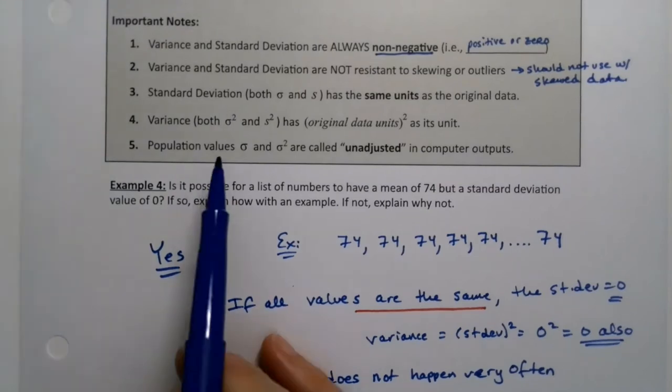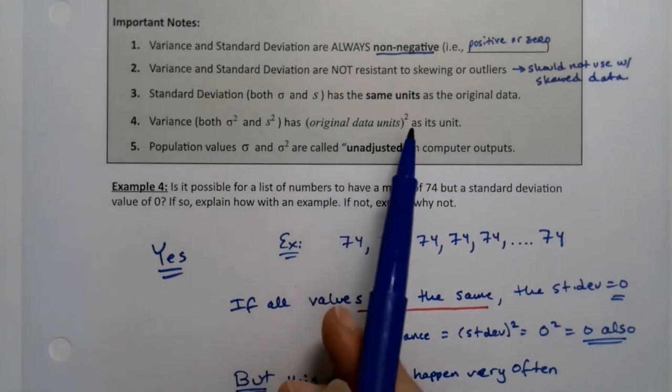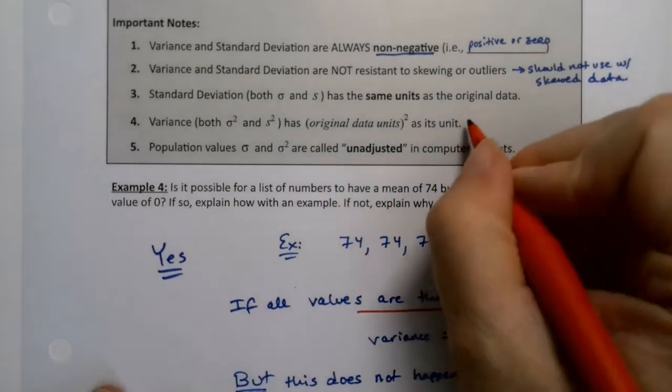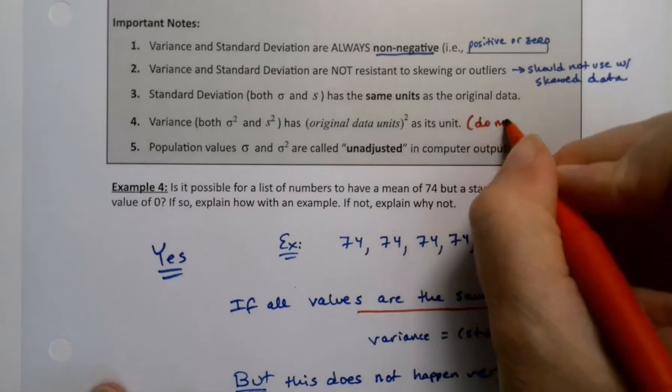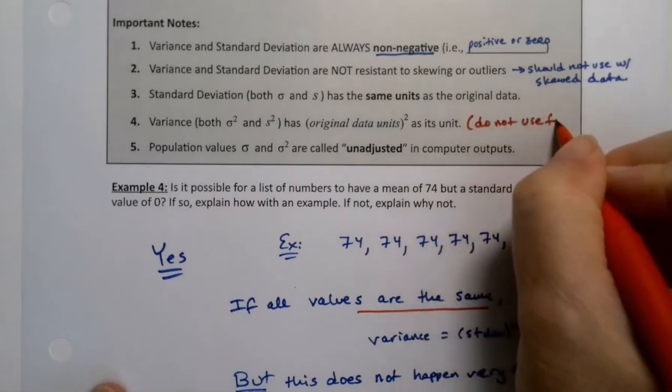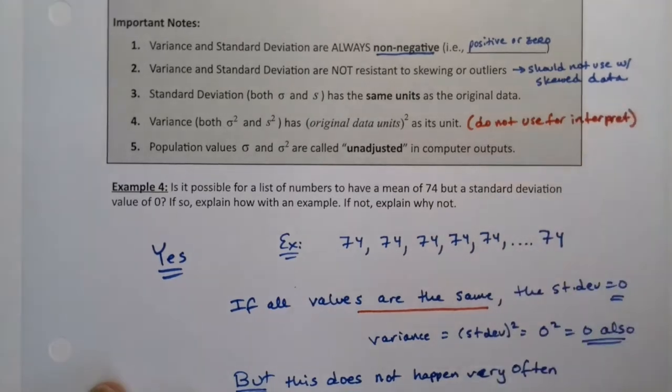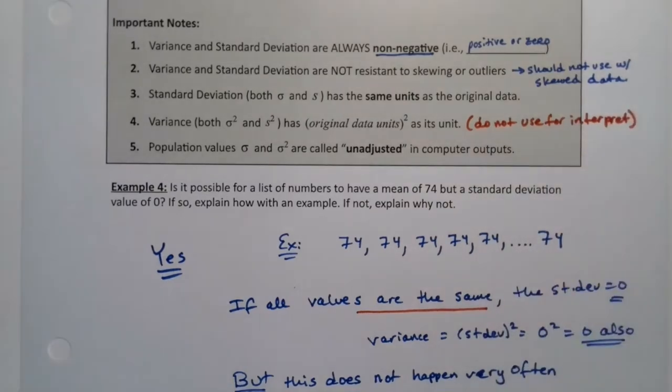And then variance would be the units squared, which doesn't interpret well. So we don't use this for interpretation. Do not use for interpretation because it doesn't really mean anything. The meaning is that the larger the variance is, the more spread out the data is. That's the meaning.